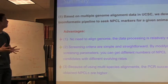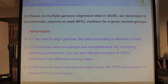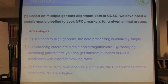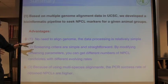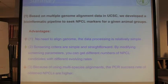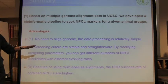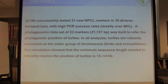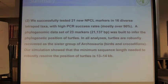Summary of our study: based on the multiple genome alignment in UCSC, we developed a bioinformatics method to seek NPCR markers. The advantage is you don't need to align genomes yourself, so data processing is relatively simple. Screening criteria are simple and straightforward — you can change them and get different numbers of candidates, so it's scalable. Because we use multiple genomes, the PCR success rate is higher than previous studies. Using these 23 markers, we think we are getting close to the answer: turtles are sister to archosaurs, not to crocodiles alone. That's all. Thank you.